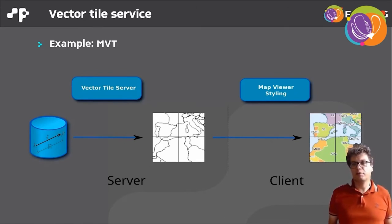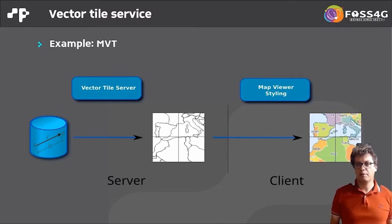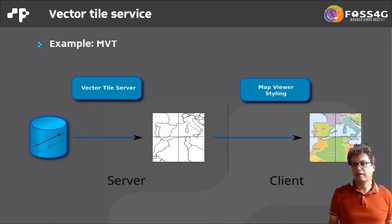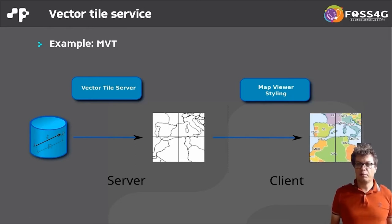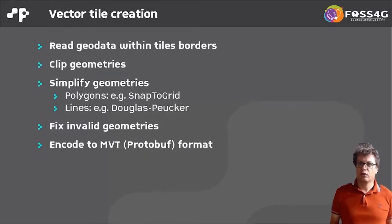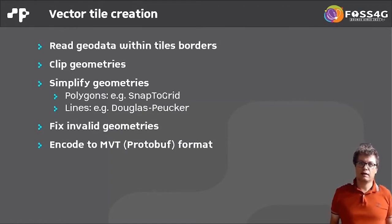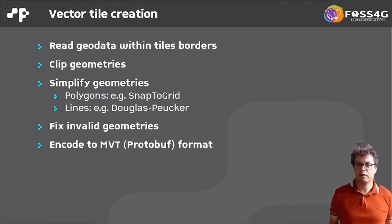In contrast, a vector tile server only produces vectors and the styling is applied on the client side. The styling information and attributes have to be included together with the vector data, and the map viewer applies the styling. The main advantage is that the client can style it in different ways and it can be much more interactive. The steps for creating these tiles include reading data within the tile borders, clipping geometries, and usually applying simplification for polygons and lines to reduce data size.